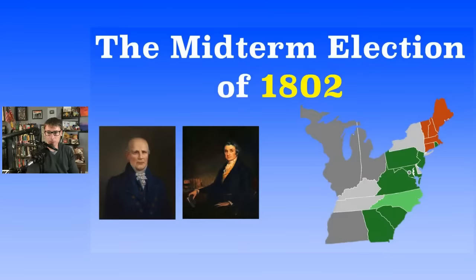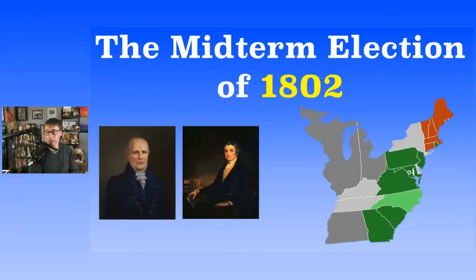In the House of Representatives in 1802, there were 142 seats total; 72 were needed for a majority. The Democratic-Republicans already had the majority and gained 35 seats, ending up with 103 out of 142 seats. The Federalists had only 38 seats. We see a big change in 1802 — the Democratic-Republicans now control the trifecta: President, House, and Senate.